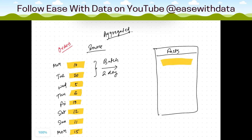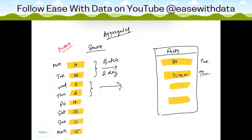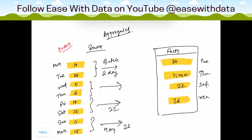The first batch will load data on Tuesday — we will get around 30 records. Similarly, when the batch runs on Thursday, we are running the batch every two days, and the data will get loaded into the fact, which will be around 11 records. When the third batch runs on Saturday, we'll have around 22 records on the fact. When the fourth batch runs on Monday, we'll get 26 records. We are loading data in aggregated fashion, so every two days we have data, which is higher in grain.